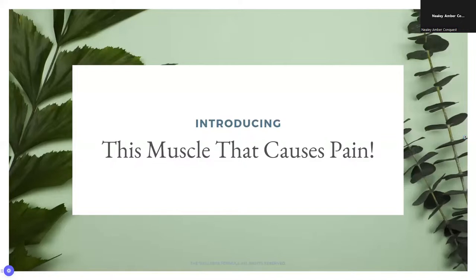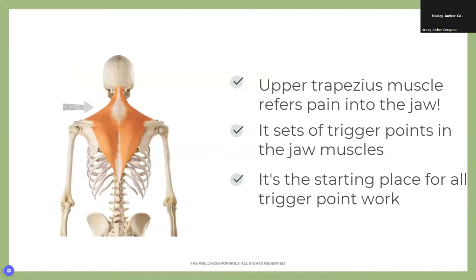We're going to start with a demonstration — something you can do on yourself, which is really fun. I'm going to be talking about a muscle that causes a lot of pain called the upper trapezius. The whole trapezius muscle has four sides, which is why it's called trapezius, but we're interested in the upper portion that connects to the base of the skull and out to the shoulder.